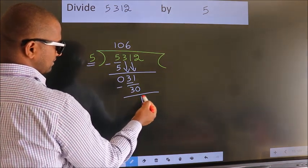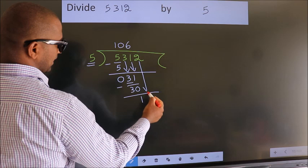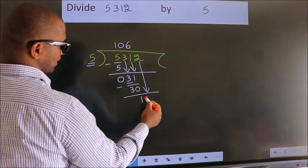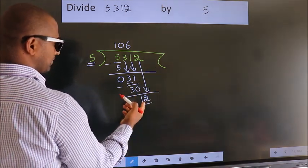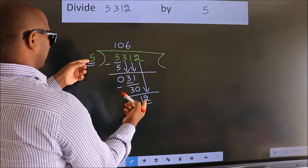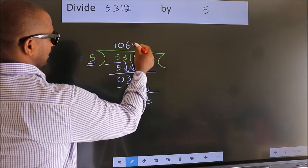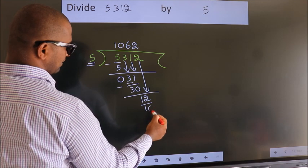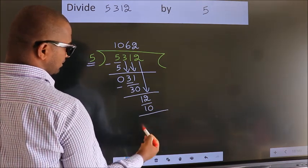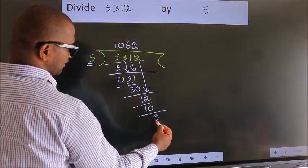After this, bring down the beside number, so 2 down. So 12. A number close to 12 in the 5 table is 5 times 2, which is 10. Now we subtract. We get 2.